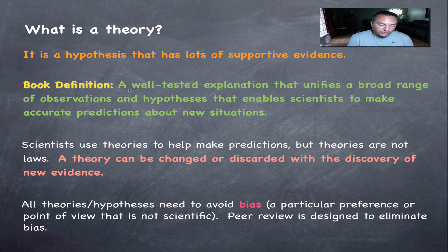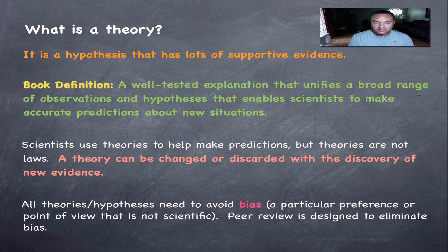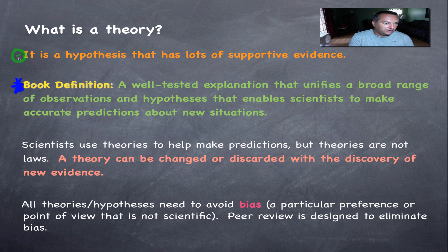The textbook definition, from Miller-Levine's Biology — the one with the parrot on it — is: a well-tested explanation that unifies a broad range of observations and hypotheses that enables a scientist to make accurate predictions about new situations. So when it comes time for a test, make sure you know that definition, but if you want to keep it simple, remember that simpler version as well.